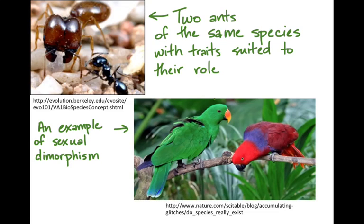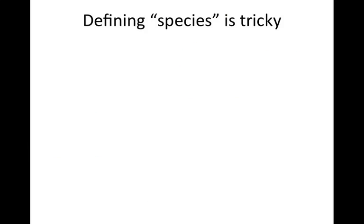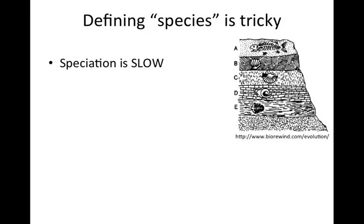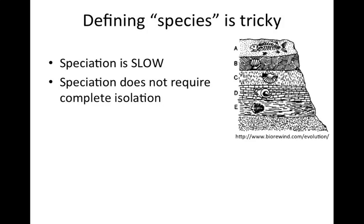So if we're going to talk about speciation, we need to know what most researchers are using as the definition of a species, and that's actually a really tricky question for a number of reasons. First of all, speciation is slow — it happens gradually over a long time, at least it often does. So we might know of two populations that seem to be isolated and seem to be diverging into different species, but when do we decide to call them a different species and not two populations of the same species?